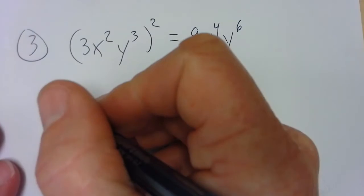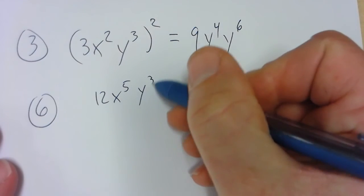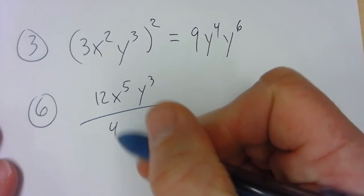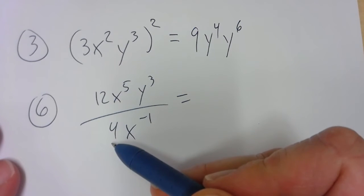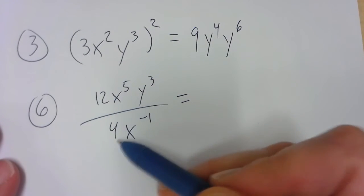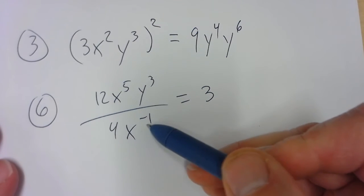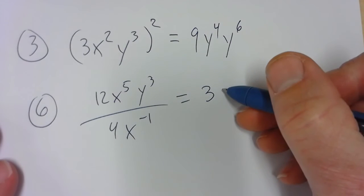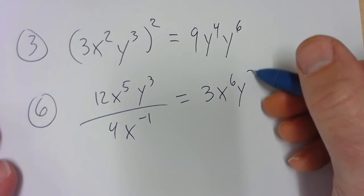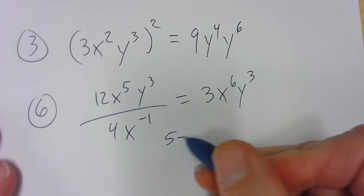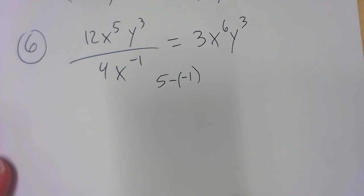That's 9x to the 4th y to the 6th. Now it's 12x to the 5th y to the 3rd over 4x to the negative 1. Regular numbers, you do regular things: 12 divided by 4 is just plain old 3. And we subtract the exponents: 5 minus a negative 1 — that's a double negative, so you change the sign — it's 6. So the answer is 3x to the 6th y to the 3rd.